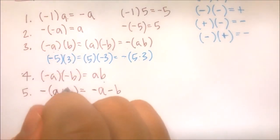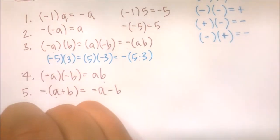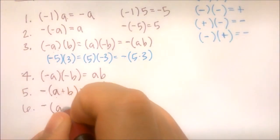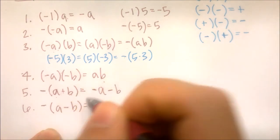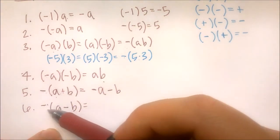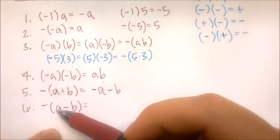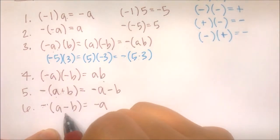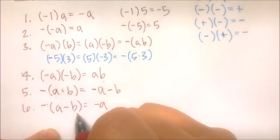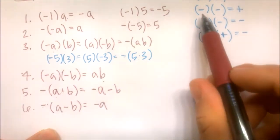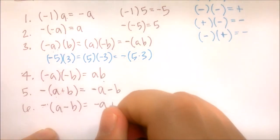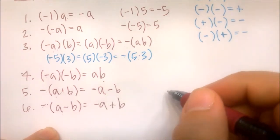This changes if it were subtraction. For negative times a minus b, we distribute the negative: negative 1 times a gives negative a. Then for the minus b term, we already have a negative b, and a negative times a negative is a positive. So we get negative a plus b — notice how the sign on b changed compared to the addition case.